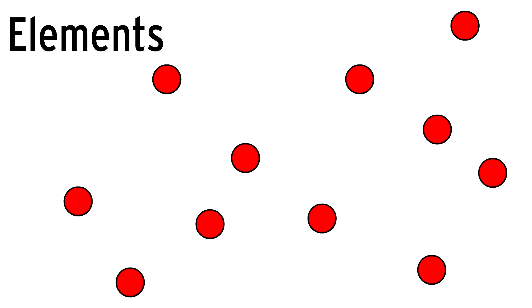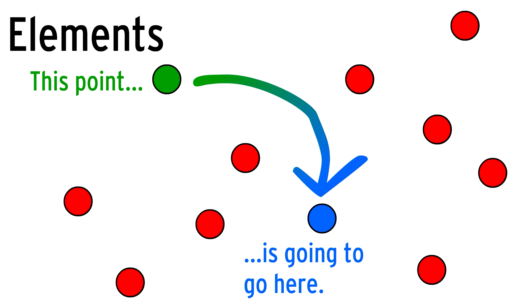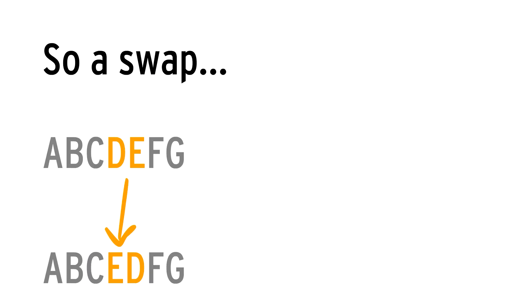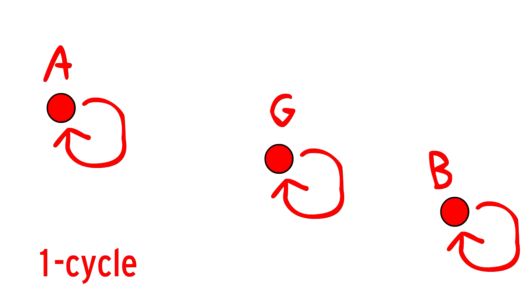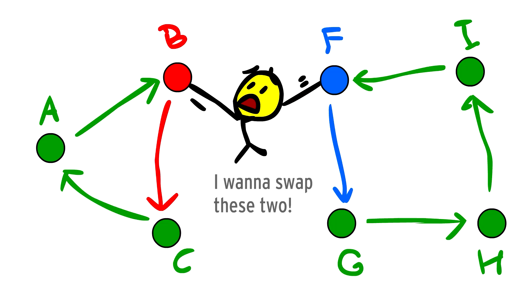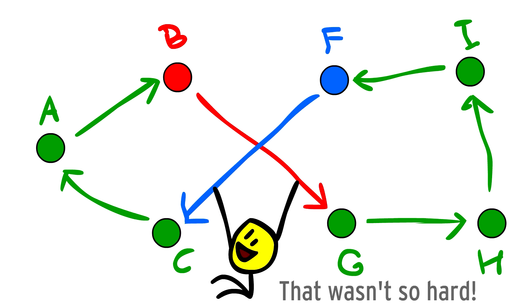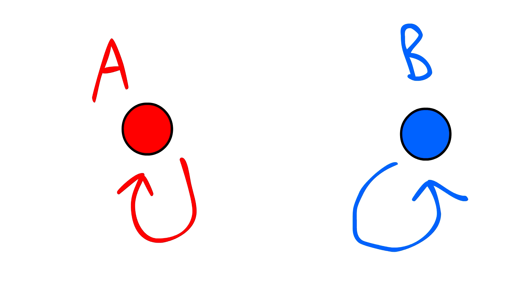Let's take an arbitrary set of elements — it doesn't matter how many. I'm going to use an arrow to say this point is going to go here. So a swap, also known as a two-cycle or transposition, looks like this. Elements that don't move are one-cycles, and they look like this. Cycles can also be much longer. What if I want to swap two elements that are already pointing somewhere? Easy — just swap the endpoints of their arrows. And by the way, swapping two fixed points is also the same idea, just that the arrows originally pointed at themselves.